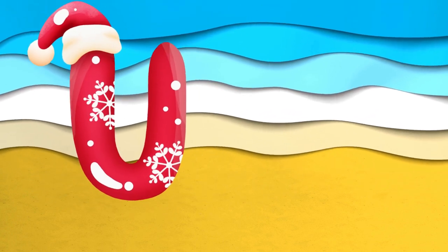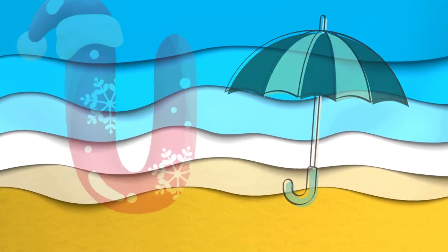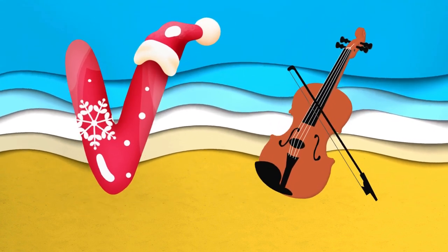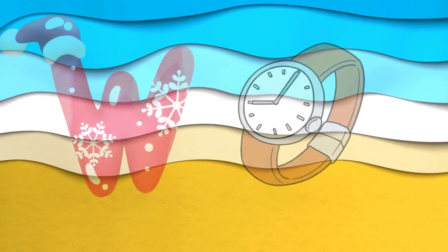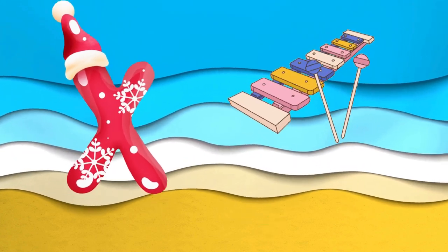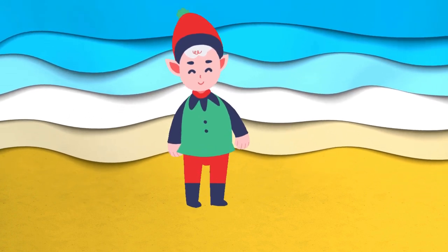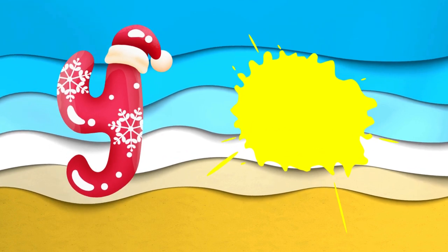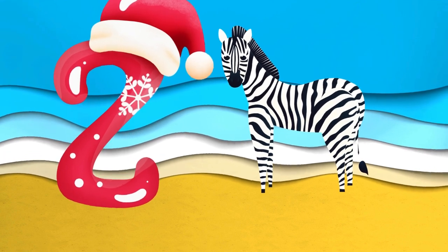U is for umbrella, u-u-u-umbrella. V is for violin, v-v-violin. W is for watch, w-w-watch. X is for xylophone, z-z-xylophone. Y is for yellow, ye-ye-yellow. Z is for zebra, z-z-zebra.